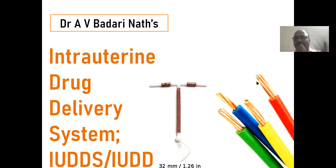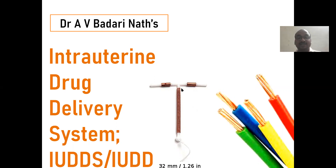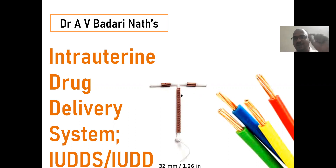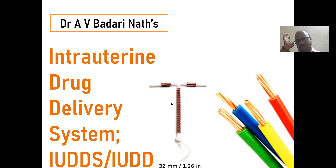Generally we use copper for the conduction of electricity — these are copper wires. But keep in mind, we are also using copper for the prevention of pregnancy. This is a copper T. It is a T-shape, a very small white plastic letter, like the small letter T children play with. It consists of a copper wire, and this small device is inserted into the uterus. So this device is called the intrauterine device, intrauterine drug delivery system.